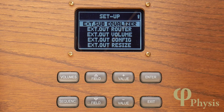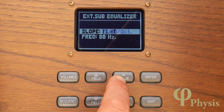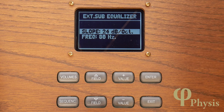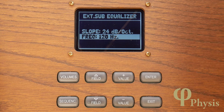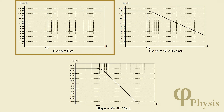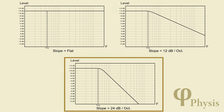A subwoofer needs only to reproduce sound below a certain frequency, and many subs have their own low-pass filtering. If your sub doesn't have built-in filtering, the organ's general output can be filtered instead. In the setup menu, scroll down to external sub equalizer — it's possible to make the general output either flat (unfiltered) or to give it a slope of 12 or 24 dB per octave. You can also alter the turnover frequency, which determines where the subwoofer output begins to roll off. The flat curve is used if your sub does its own filtering or if you're feeding a reverb unit; the filtered versions are for subs without built-in filtering, with the steeper curve giving a sharper roll off of high frequencies.